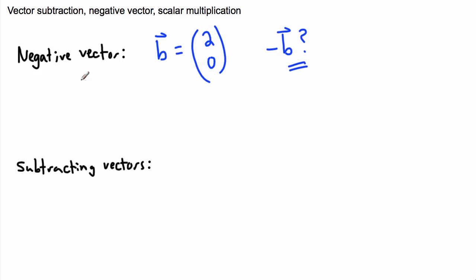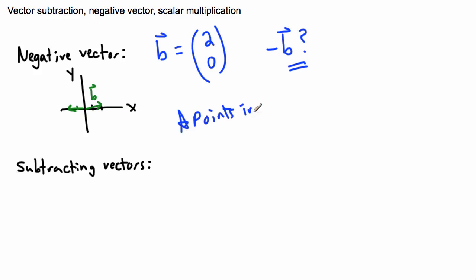I can actually try to draw this here. This is a vector that goes 2 in the x direction and 0 in the y direction — so it's this vector right here. That's b. So negative b, it should make sense geometrically speaking, that it should be something that goes opposite in direction. It points in the opposite direction. That's what a negative vector does.